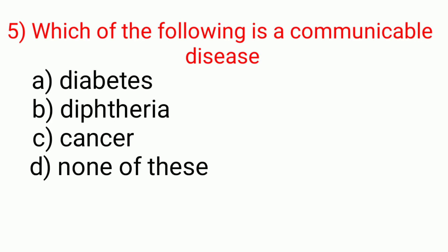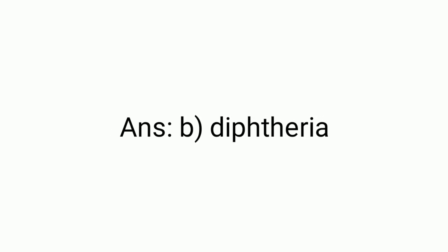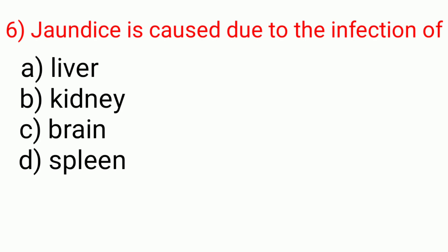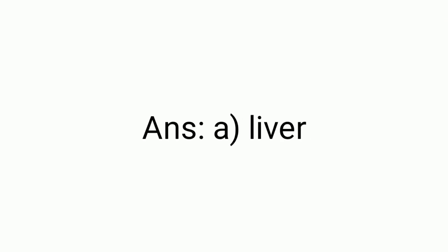Question number five: Which of the following is a communicable disease? Answer is B, diphtheria. Question number six: Jaundice is caused due to the infection of a) liver, b) kidney, c) brain, d) this gland. Answer is A, liver.